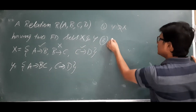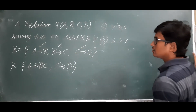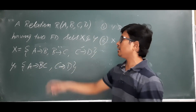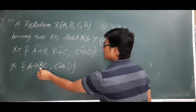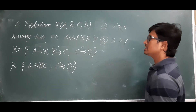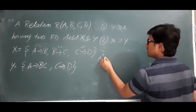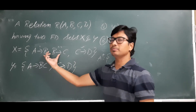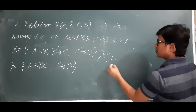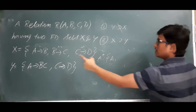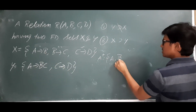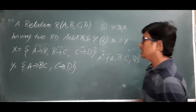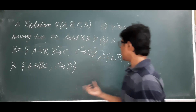For better understanding, let's also check whether X covers Y or not — meaning the FDs present in Y can be derived from X. A→BC is not directly present in X, so we check indirectly by calculating A+ from the FDs in X. A+ starts with a, then a determines b, so b is included; b determines c, so c is included; c determines d, so d is included.